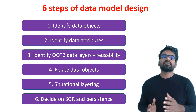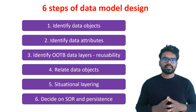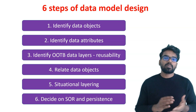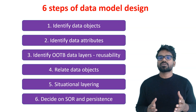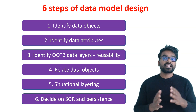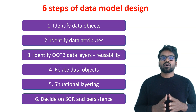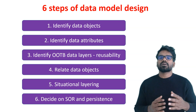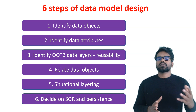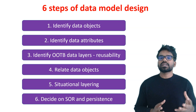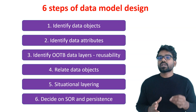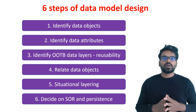The third step is identify the out-of-the-box data layers. As we know, we build our Pega application over the Pega platform, and in some cases you may also be using the framework layers. Pega ships a lot of out-of-the-box data layers — for example, for address you may have some data layer. You need to identify these so that you can reuse them as-is, instead of building another data layer on top.